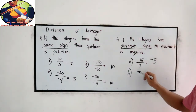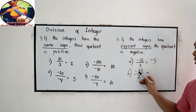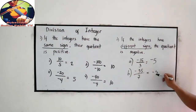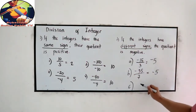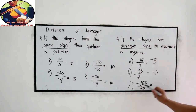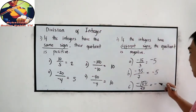Letter B: negative 35 divided by 7. Negative and positive, so that is negative — negative 35 divided by 7 is negative 5. And letter C: negative 100 divided by 20. Negative divided by positive — 100 divided by 20 is 5.